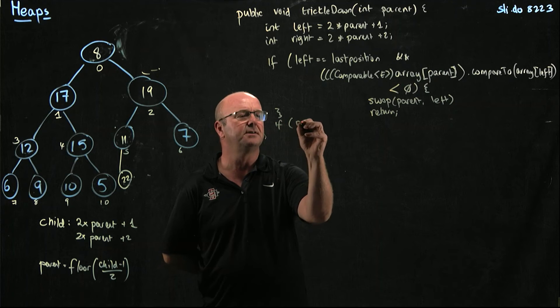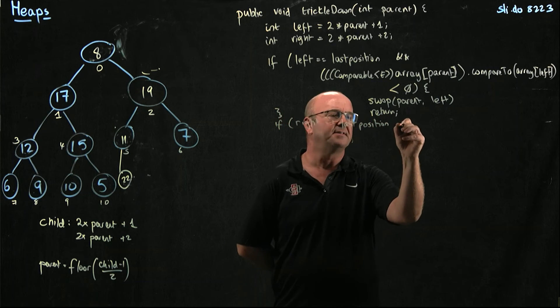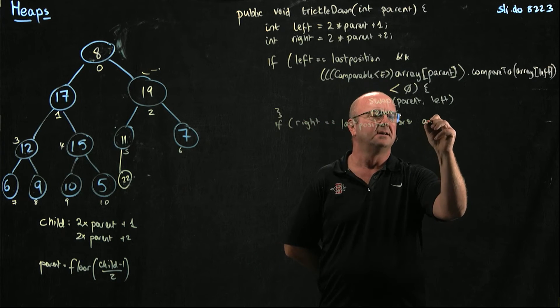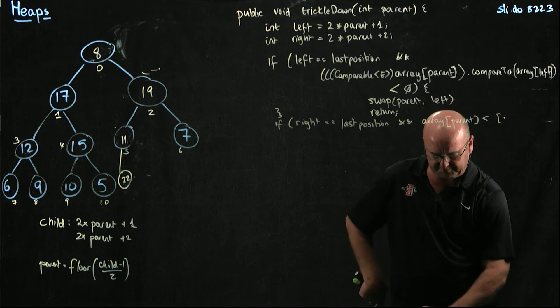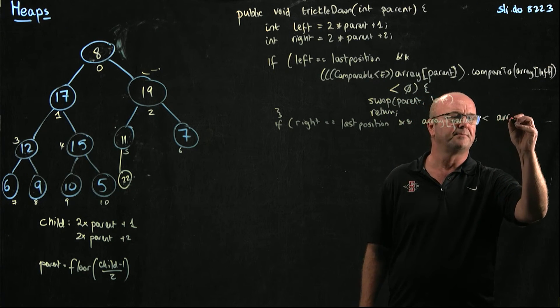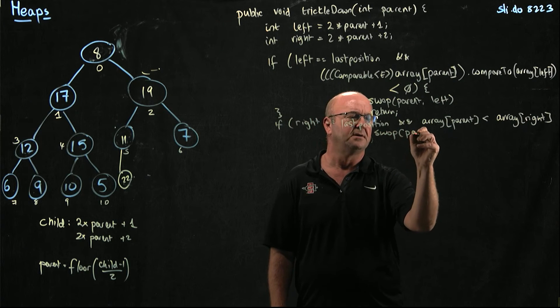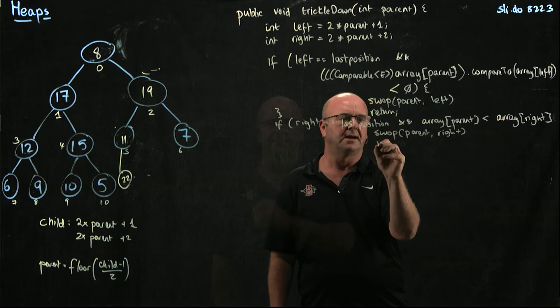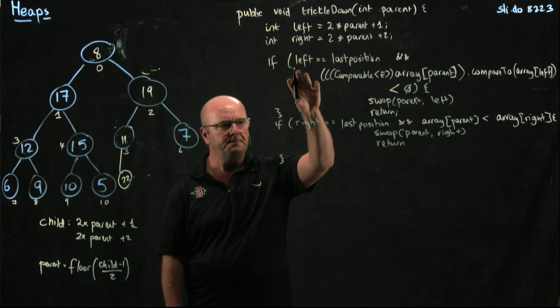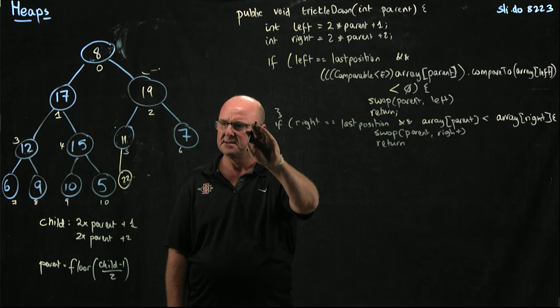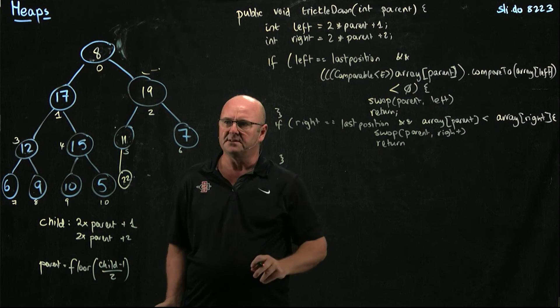We do the same thing with the right child. So if right is equal to last position, and this time I'm just going to cheat and use shorthand notation here. So if array parent is less than array right, then we're going to swap parent and right, and we're going to get out of there. You don't need an else here. This is an if. If this is true, we return. So we're done. So we never get to this. So the only time we're at this if statement is if this is false. So by default, it's an else if.